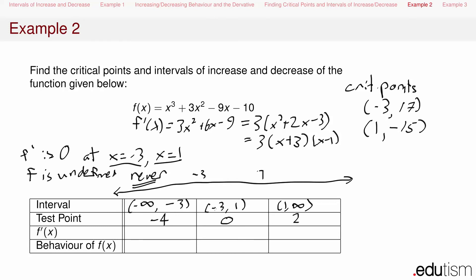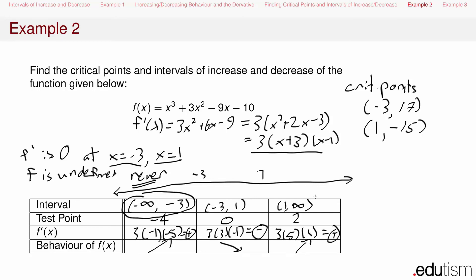We plug each test point into the factored derivative 3(x + 3)(x - 1). Plugging in -4: 3(-4 + 3)(-4 - 1) = 3(-1)(-5), which is positive. Plugging in 0: 3(3)(-1), which is negative. Plugging in 2: 3(5)(1), which is positive. So the function is increasing on (-∞, -3), decreasing on (-3, 1), and increasing on (1, ∞).